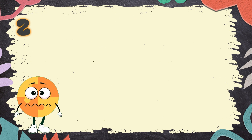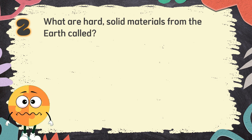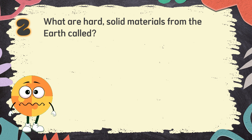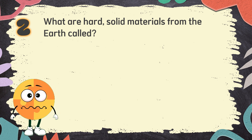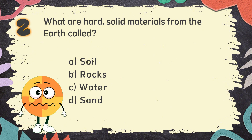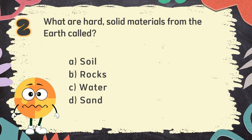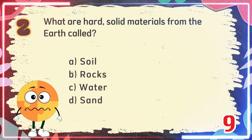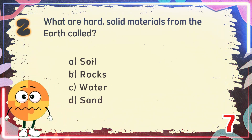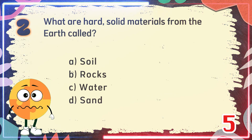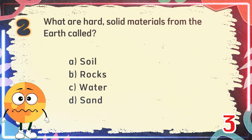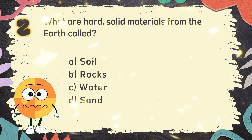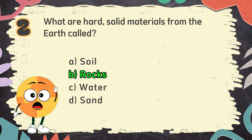Number 2: What are hard, solid materials from the Earth called? The choices are: A. Soil, B. Rocks, C. Water, D. Sand. The correct answer is B. Rocks.